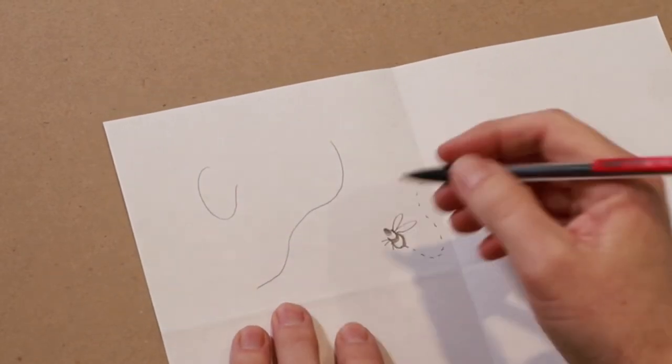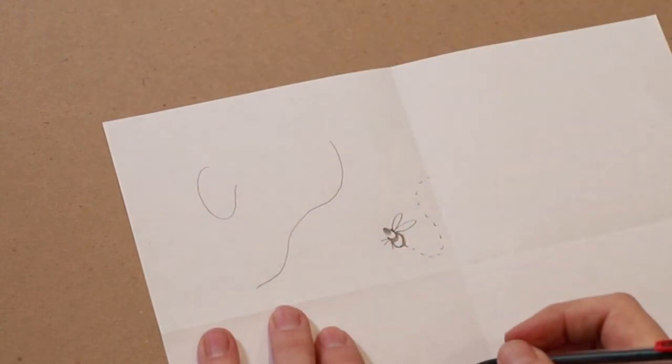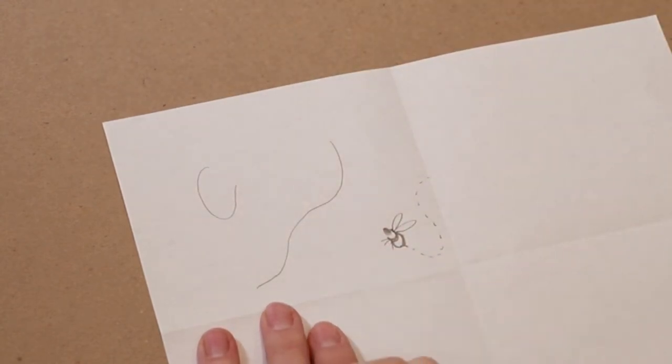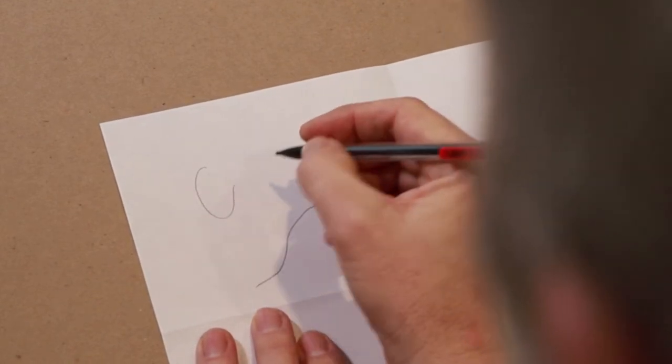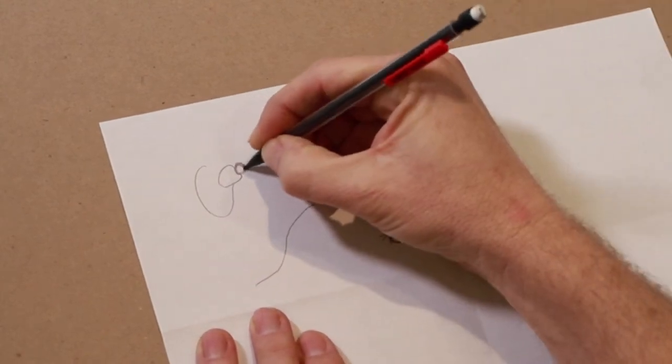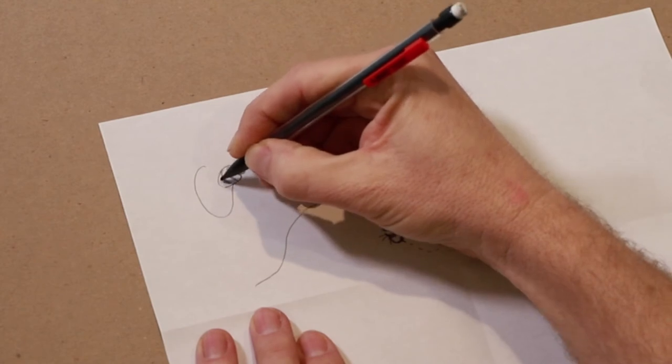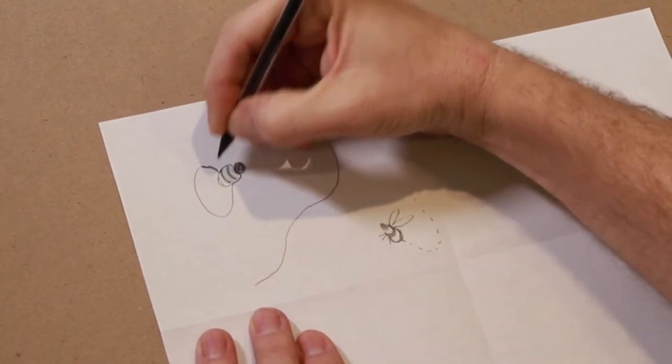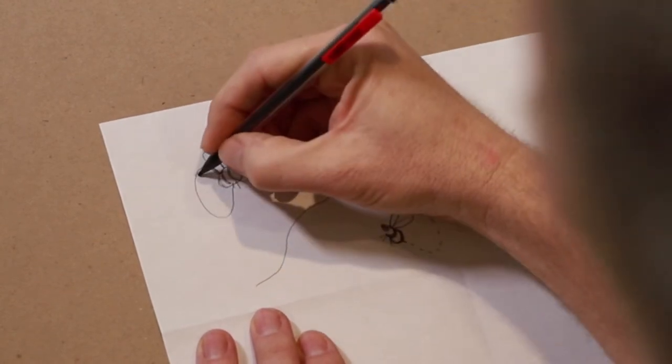There's another bee coming out right here. I'll draw this one with the same style. Filled in head. Striped. And that hole continues up.